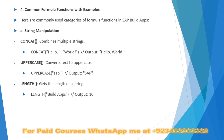Here are commonly used categories of formula functions in SAP Build Apps. Number one is string manipulation. The most commonly used function is CONCAT, which combines multiple strings. Number two is UPPERCASE, which converts text to uppercase. The LENGTH function is also important — it gets the length of a string.